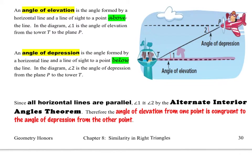An angle of depression is the angle formed by the horizontal line and a line of sight to a point below the line. In this diagram, angle 2 is the angle of depression from the plane P to the tower T. Since all horizontal lines are parallel, angle 1 and angle 2 are congruent by the alternate interior angles theorem. That means that the angle of elevation from one point is congruent to the angle of depression from the other point — it's almost like they come in pairs.